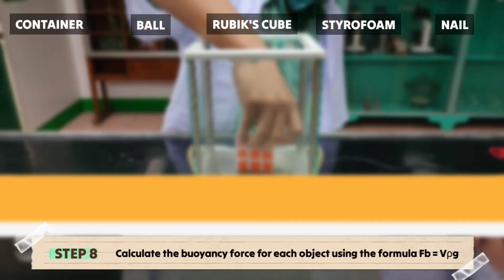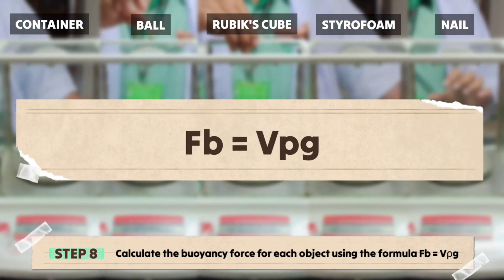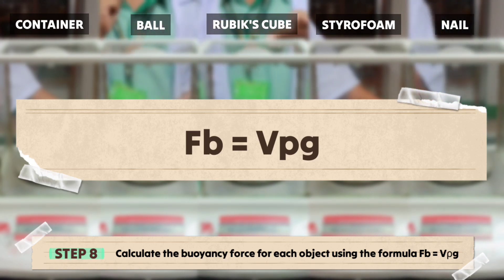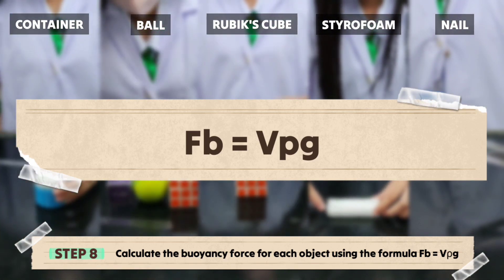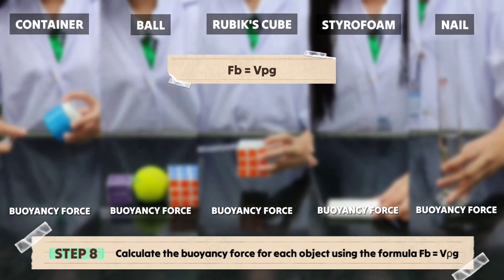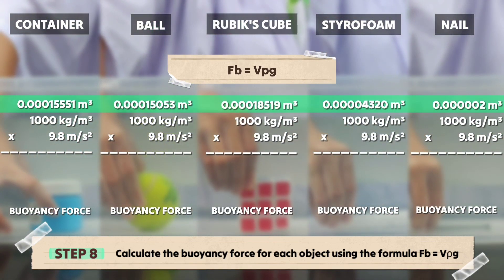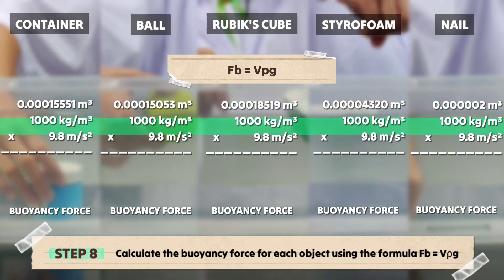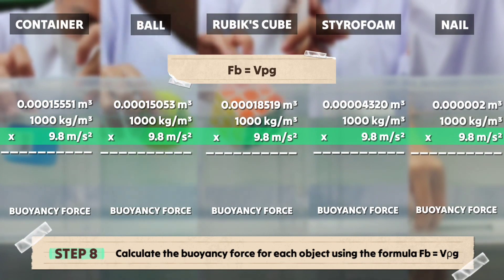Number 8: Calculate the buoyancy force for each object using the formula: FB = V × ρ × g, where FB is the buoyancy force, V is the volume of the object, ρ (rho) is the density of the fluid, and g is the acceleration due to Earth's gravity.